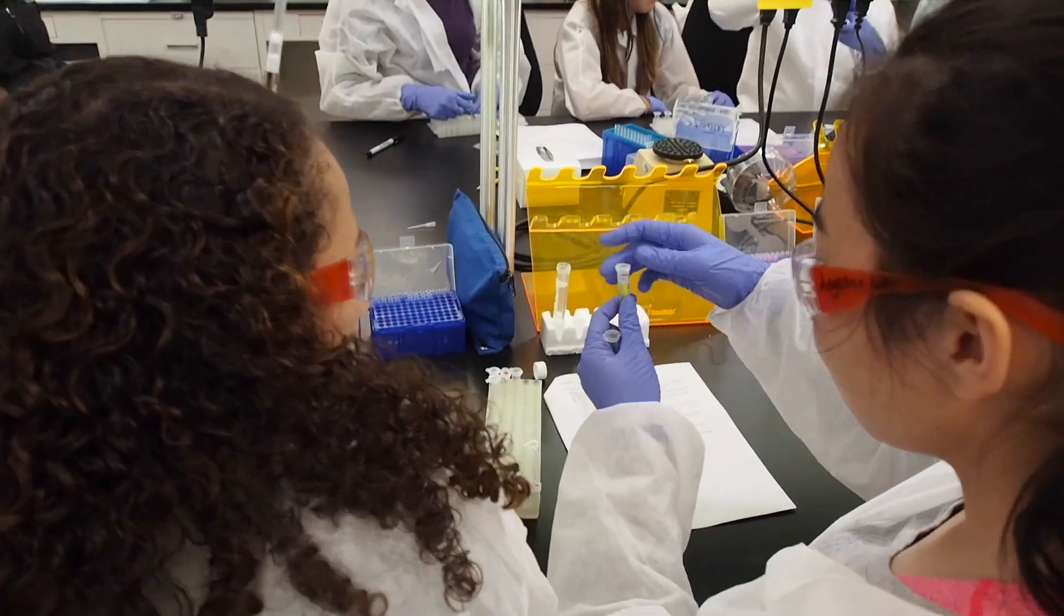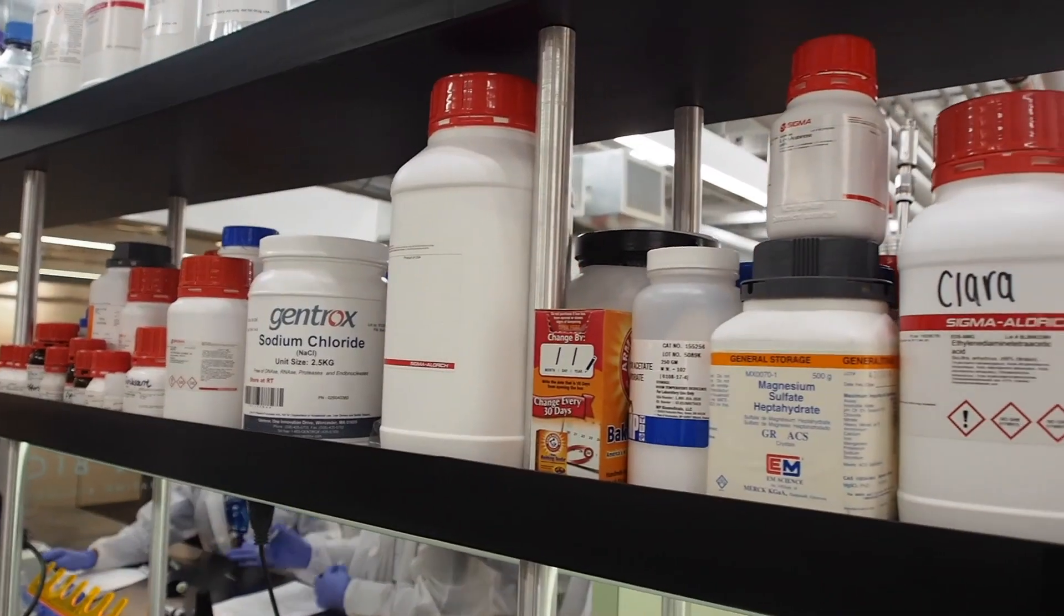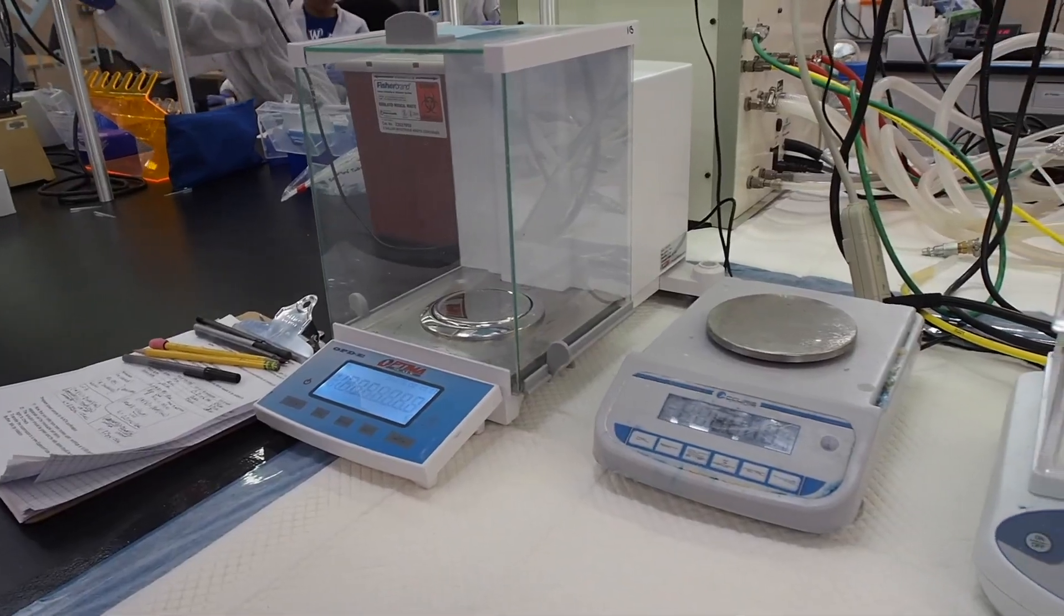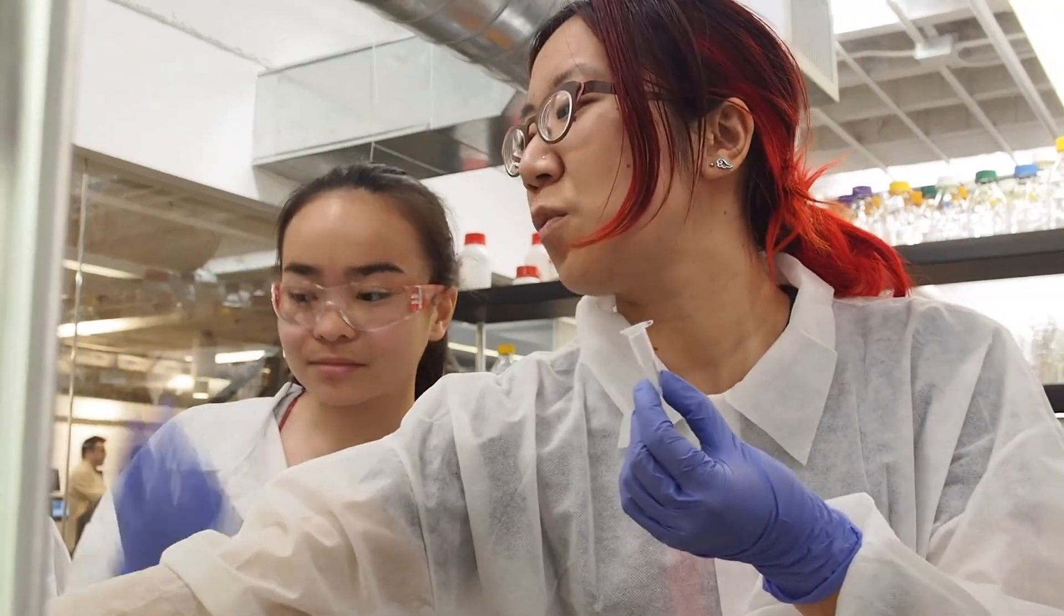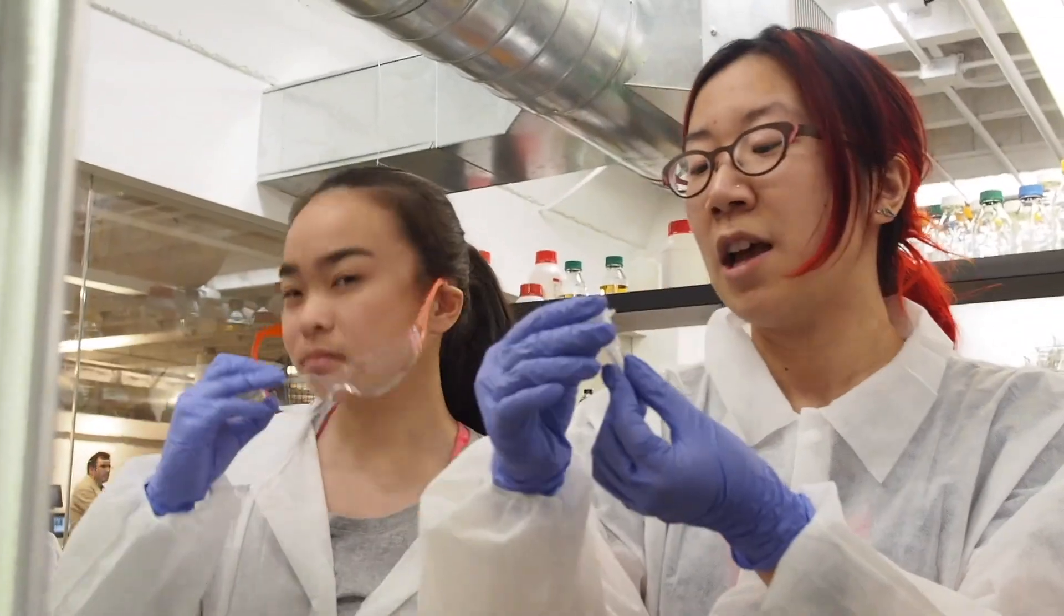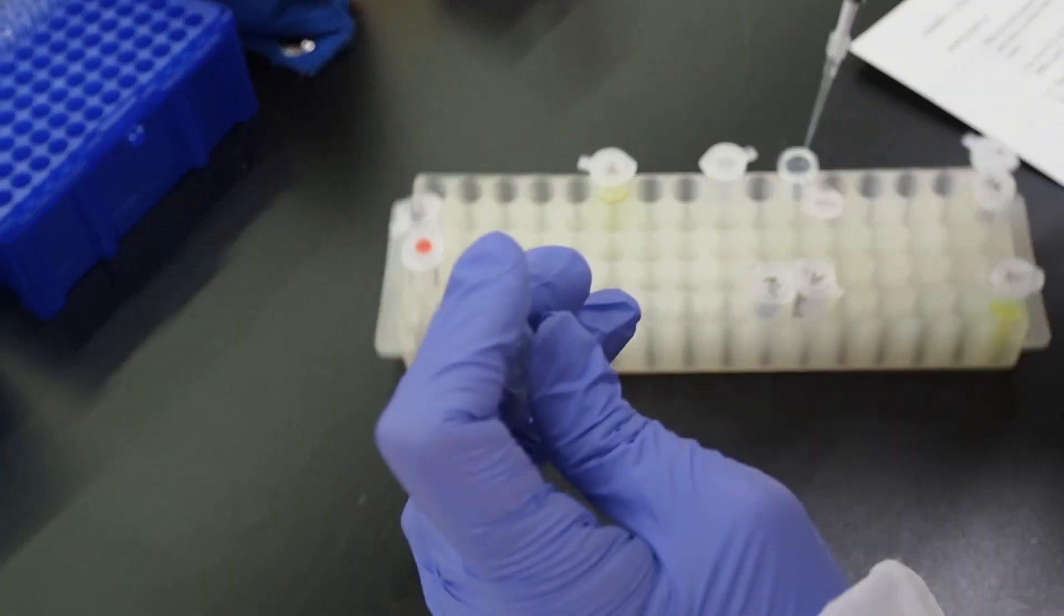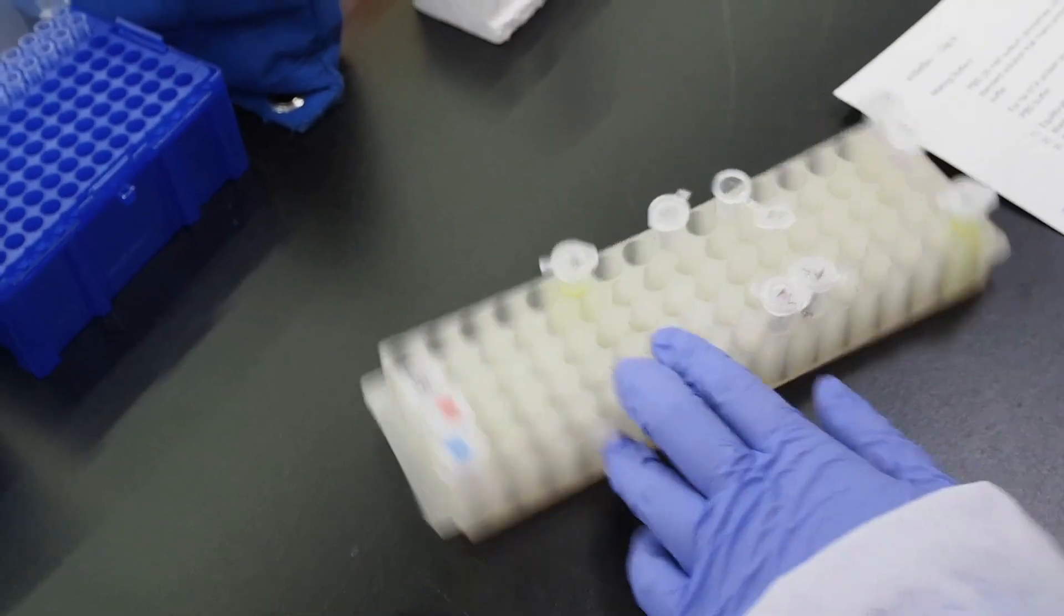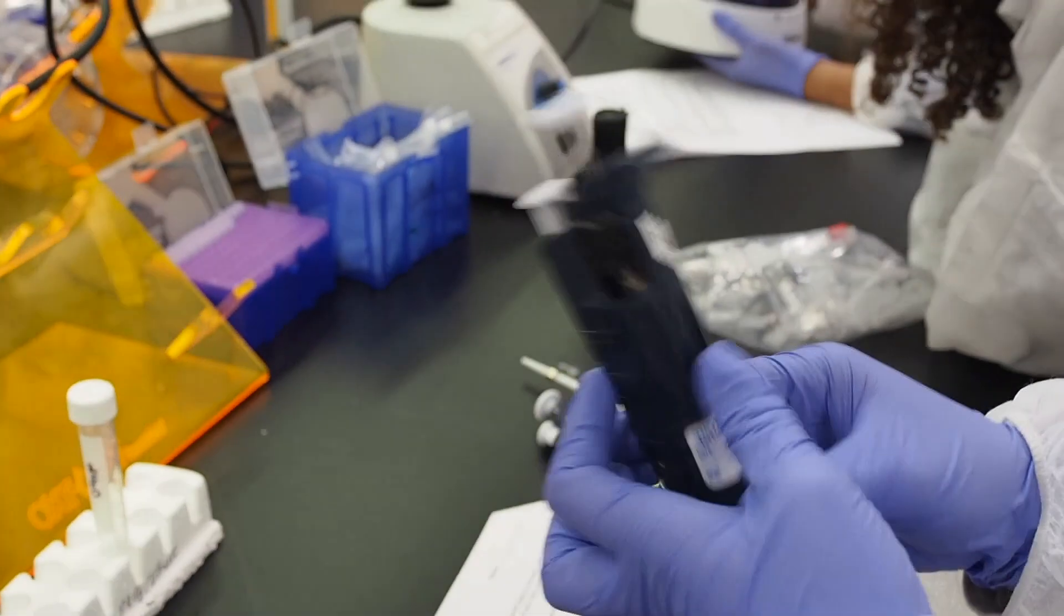We learned how to use green fluorescent protein, which is found in jellyfish and allows the jellyfish to glow. We were able to use the green fluorescent protein and a process called molecular cloning to make E. coli, a bacteria, create the green fluorescent protein.